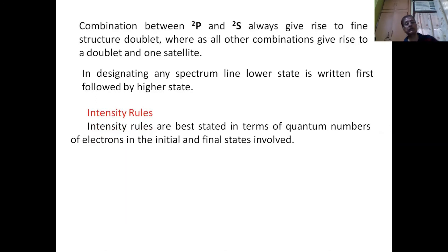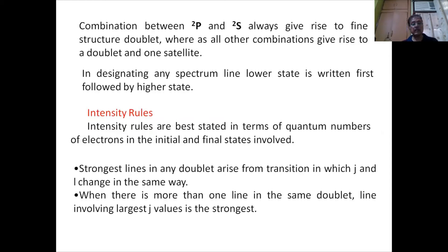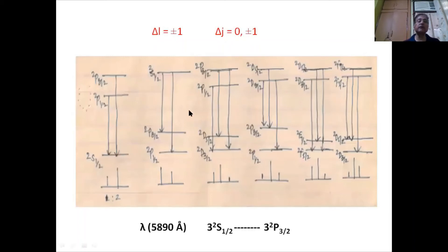Now let us consider the intensity rules. These are best stated in terms of quantum numbers of electrons in the initial and final states involved. The strongest line in any doublet arises from a transition in which j and l change in the same way. For example, in the transition ²S₁/₂ to ²P₃/₂, l changes by 1 and j changes by 1 — both change by the same number — making it the stronger line.